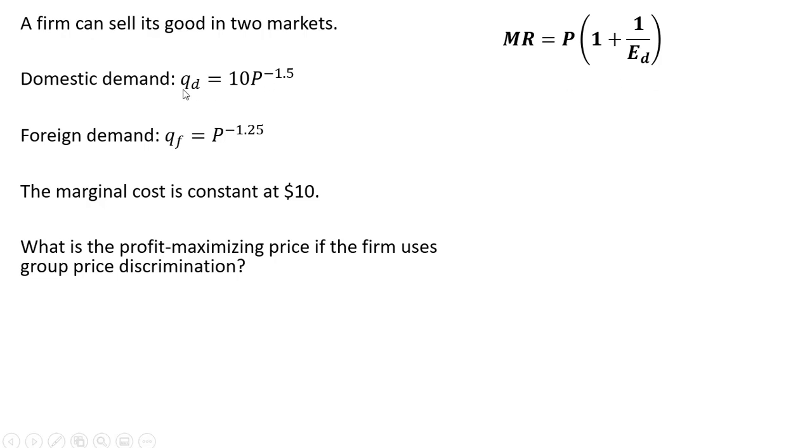Since we're dealing with demands that have constant elasticity, this will be very convenient for us. The price elasticity of demand for the domestic demand is minus 1.5, just the exponent. And the elasticity of demand for the foreign market is minus 1.25. The exponents represent the price elasticities of demand.